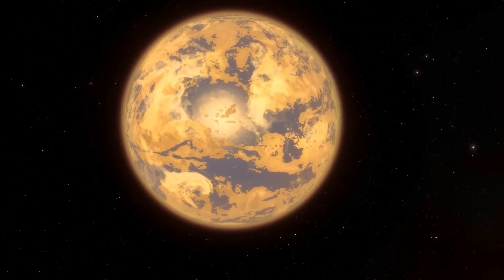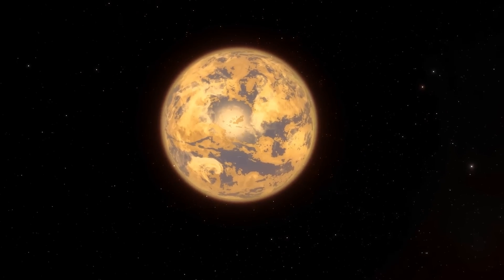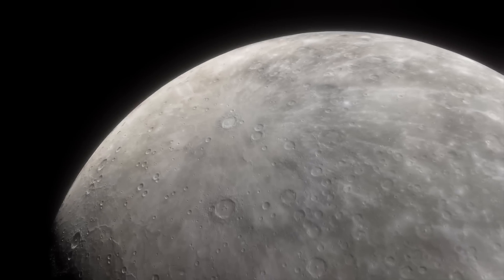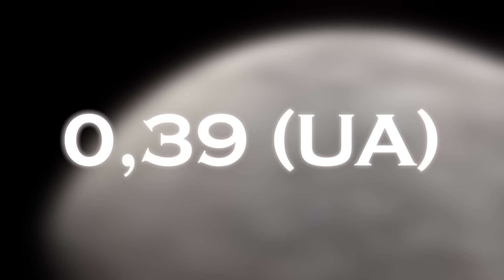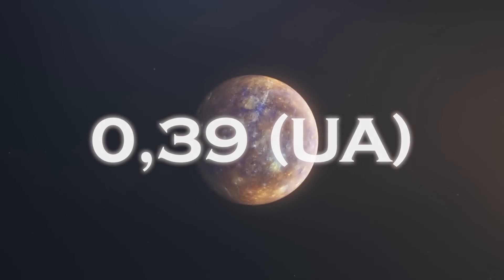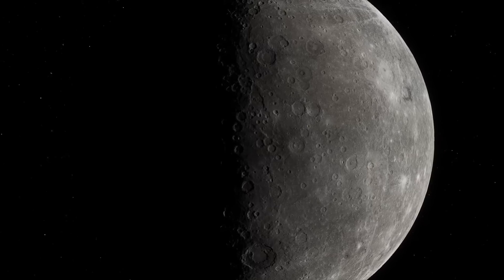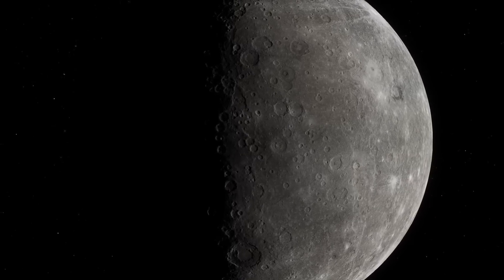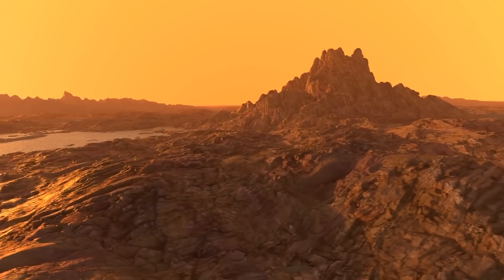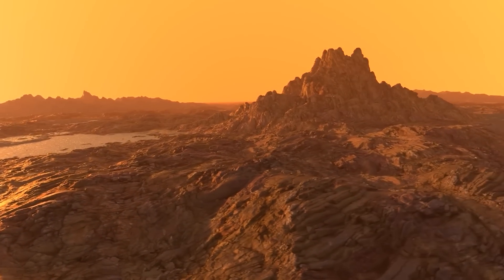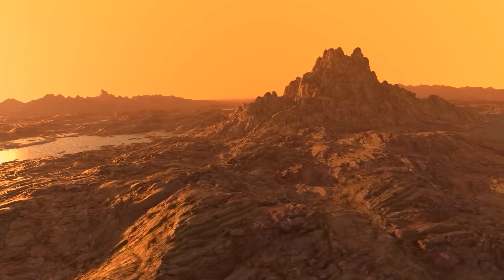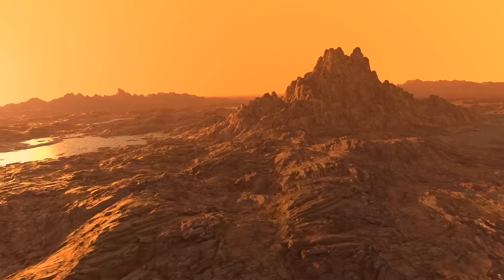Proxima b is much closer to its parent star, at only 0.05 AU, while Mercury is at a distance of 0.39 AU from the Sun. This proximity would make Proxima b an extremely hot planet, but because Proxima Centauri is a dim red dwarf, the planet receives only 60% of the energy that the Earth receives from the Sun, placing it in the habitable zone where life could exist.